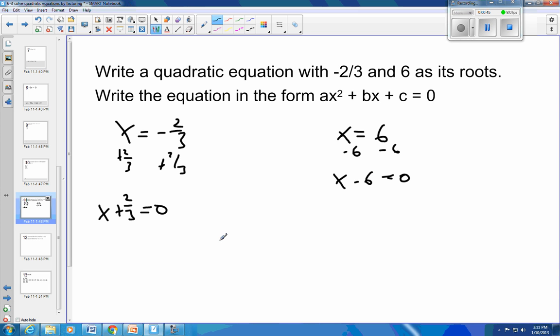From there, I'm going to take my two binomials and I'm going to multiply them together. So I'm going to have x plus 2 thirds times x minus 6. That was kind of messy. Let's try that again. From there, I'm going to set that equal to 0.